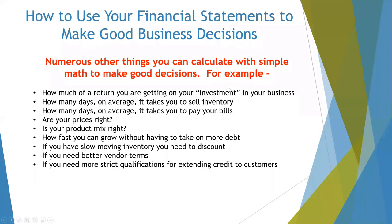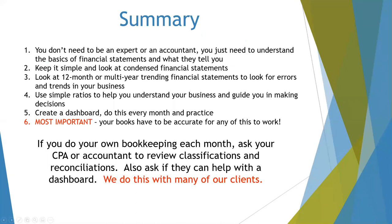There are so many ratios out there that you can calculate using your profit and loss and balance sheet. You can figure out how much of a return you're getting on your investment in your business, how many days on average it takes you to sell inventory or pay your bills. It helps you determine if your prices are right, your product mix is right, how fast you can grow without taking on more debt, if you have slow-moving inventory that you need to discount, whether you need better vendor terms, or more strict qualifications for extending credit to new customers. Many business decisions can be made with these ratios.